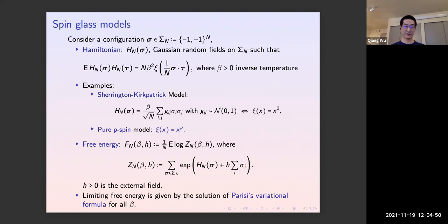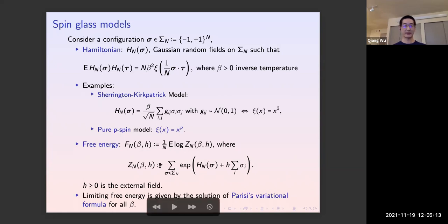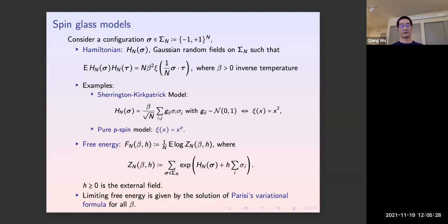In spin glass theory we care about the free energy, defined as the normalized log partition function, where the expectation is with respect to the disordered randomness. This free energy has a self-averaging property — mathematically, a concentration of the Gaussian disorder. The partition function also includes an external field term h, which is either present or not, with h greater than or equal to zero.